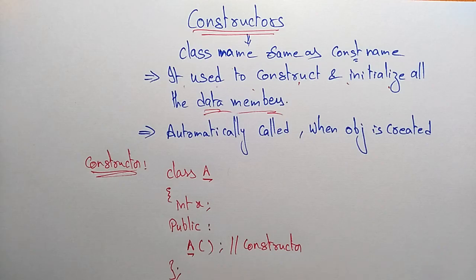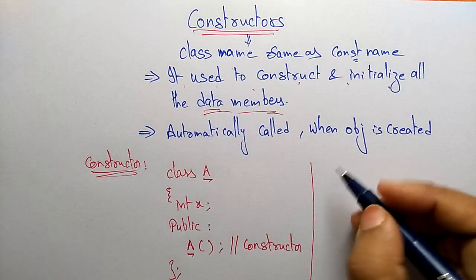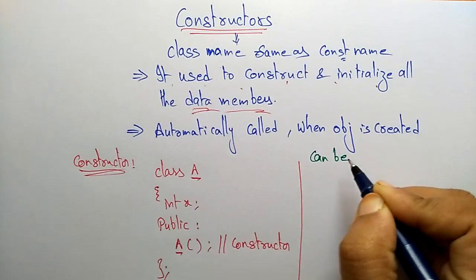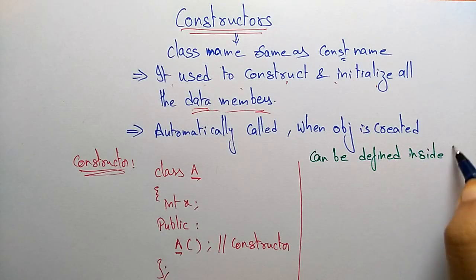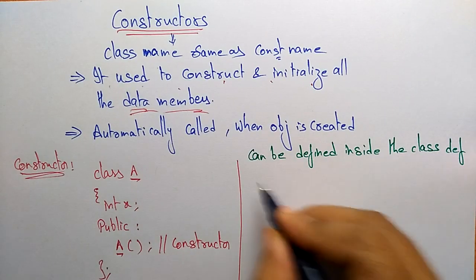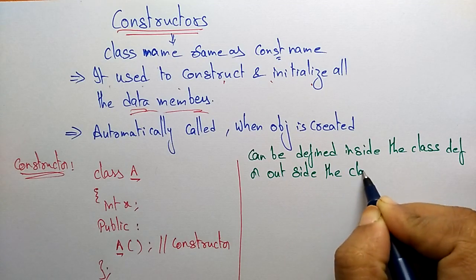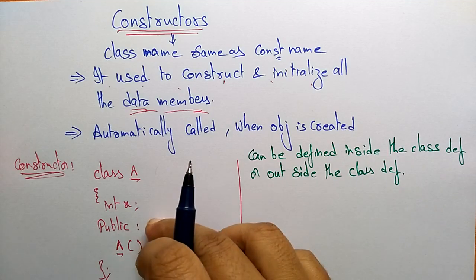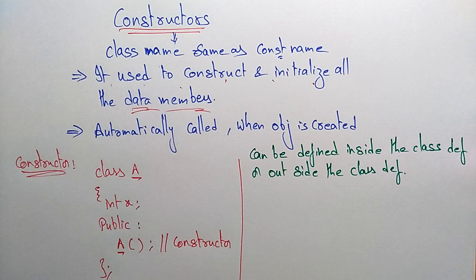A constructor can be defined either inside the class definition or outside the class definition. You can define it inside the class, or you can call it outside the class definition with the help of the class name.